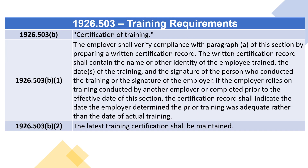1926.503(b) — Certification of training. 1926.503(b)(1) — The employer shall verify compliance with paragraph (a) of this section by preparing a written certification record. The written certification record shall contain the name or other identity of the employee trained, the dates of the training, and the signature of the person who conducted the training or the signature of the employer.